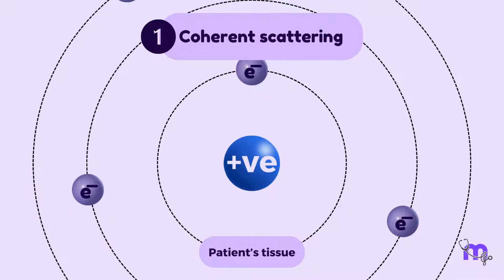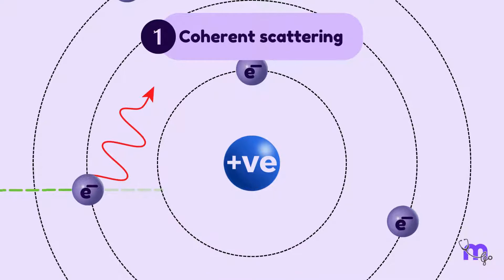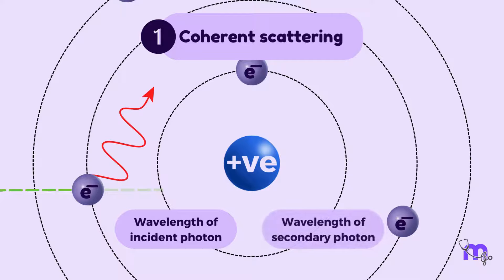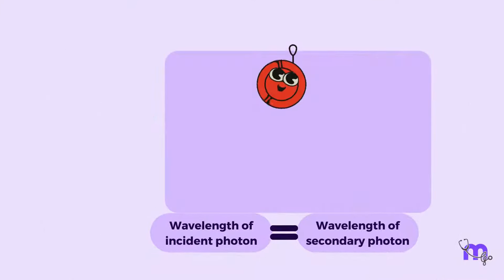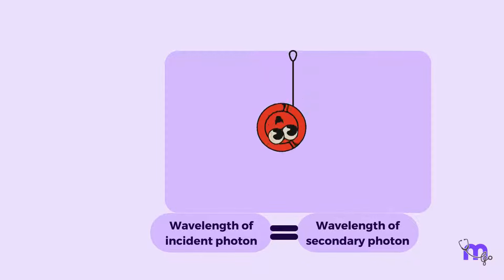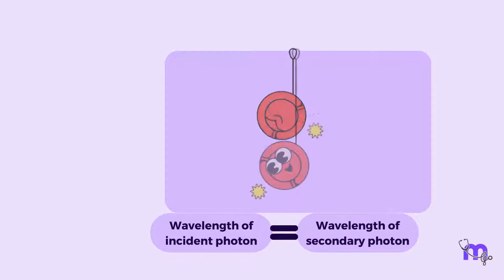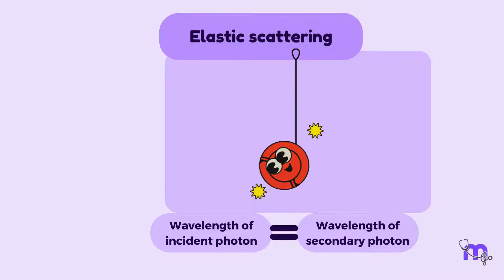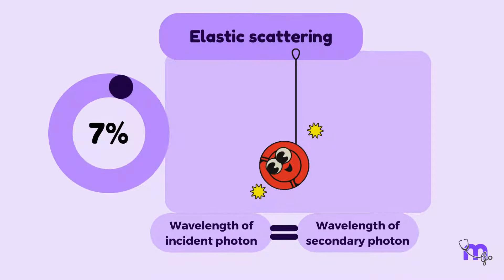Once the electrons come back to rest, electromagnetic radiation or secondary photons are emitted at an angle to the path of the incident X-ray photon. The incident photon and the secondary photons both have identical wavelengths and energies, which explains the term coherent. It is like playing with a yo-yo where the speed when released is equal to the speed it comes back with. Therefore, this type of scattering is also called elastic scattering and accounts for about 7% of the total number of interactions in a dental exposure.